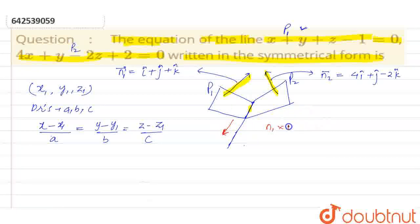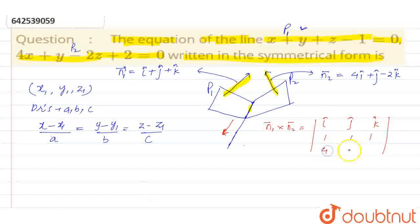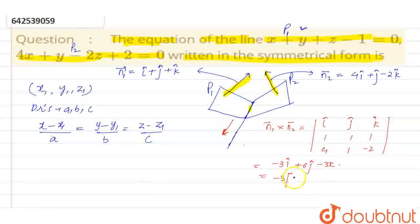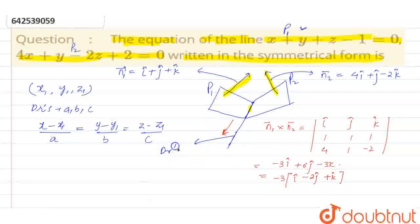We will find out n1 cross n2, which is parallel to the line. n1 cross n2 is the determinant with i, j, k in the first row; 1, 1, 1 in the second row; and 4, 1, minus 2 in the third row. This gives minus 3i plus 6j minus 3k. Taking minus 3 common, we get i minus 2j plus k. So the direction ratios of this line are 1, minus 2, and 1.